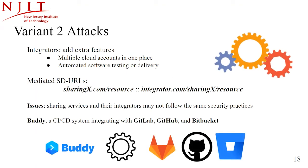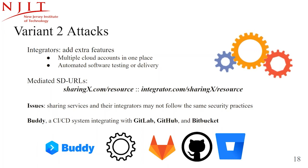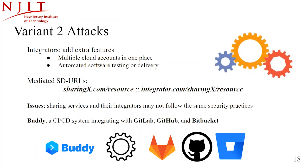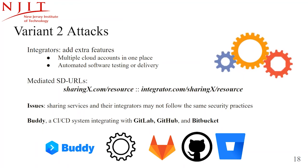The second variant of the attack involves integrators. Integrators of sharing services can add extra features not available in the sharing service itself — for example, a website managing resources from multiple cloud accounts by integrating with multiple cloud services, or an automated software testing service integrating with source code hosting. A common property of integrators is that they often offer access to shared resources through different URLs on the integrator's domain. If such URLs exhibit the state-dependent property, we call them mediated-STURLs. During our experiments, we found mediated-STURLs in Buddy, a continuous integration system for software development integrating with GitLab, GitHub, and Bitbucket.